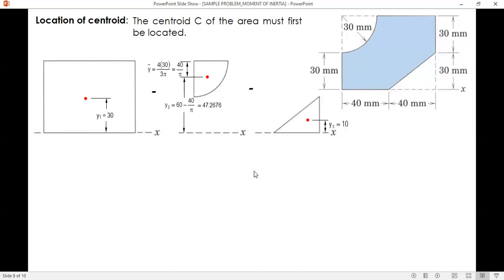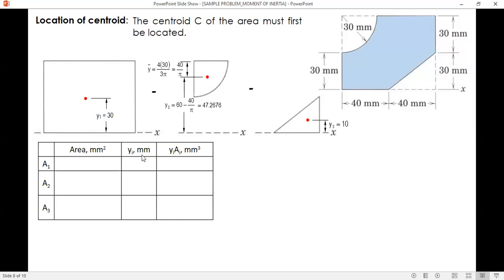After this, we construct a table. Here we have area, y distance, and product of y and A. So element 1, the area is 80 by 60. For element 2, one-fourth of pi r squared, negative 225 pi. Triangle 1 half bh, negative also, negative 600. And then add up. Area 1 minus area 2 minus area 3. The total area is 3,493.141653.